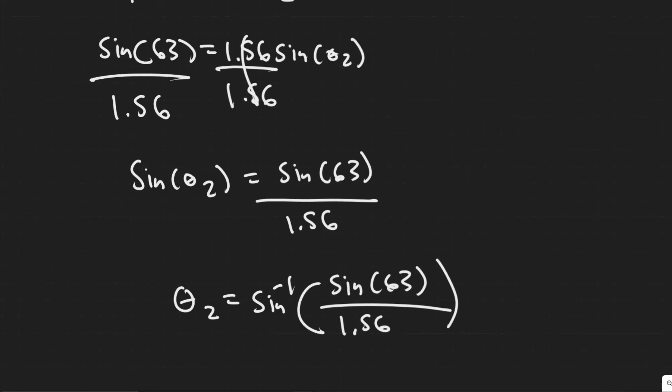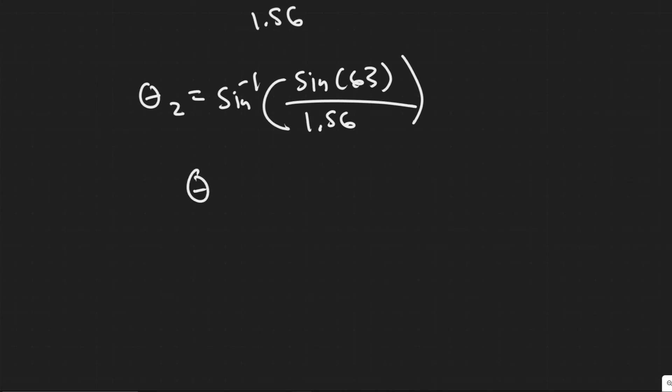Sine of 63 divided by 1.56, and then arc sine that value. So yeah, you're going to get 34.8 degrees.